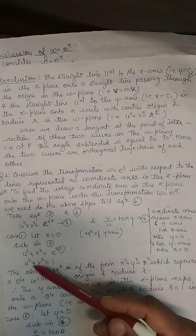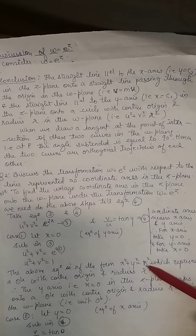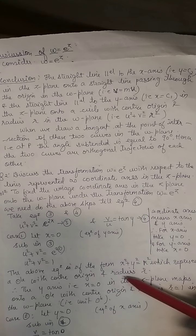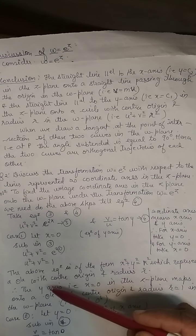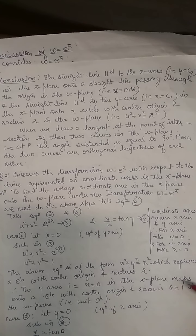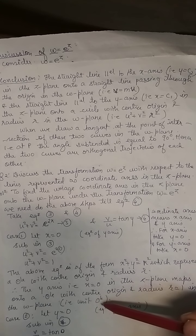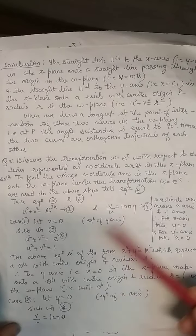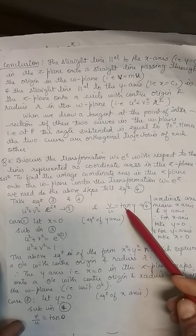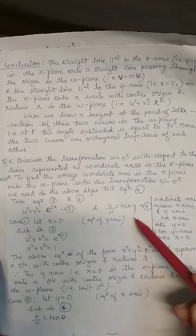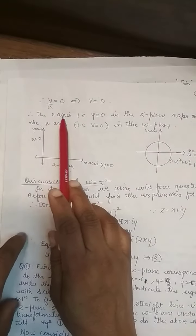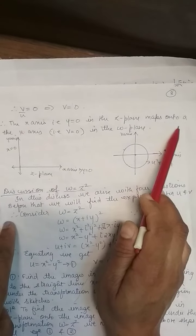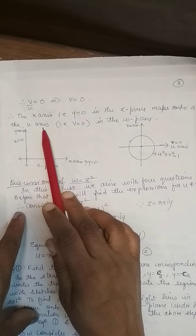e^0 = 1, so u² + v² = 1, which is a circle with center at the origin and radius r = 1 — a unit circle. Therefore the y-axis (x = 0) in the z-plane maps onto the unit circle u² + v² = 1 in the w-plane.